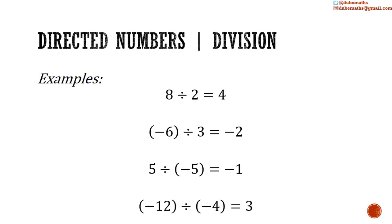Negative 12 divided by negative 4: 12 divided by 4 is equal to 3. A negative divided by a negative is equal to a positive — positive 3. That is it for this video. I am Mr. To Be.